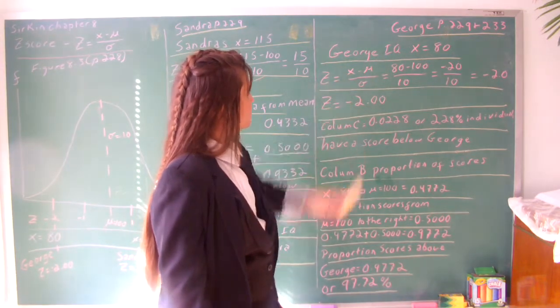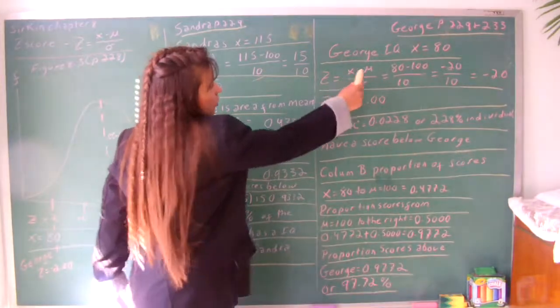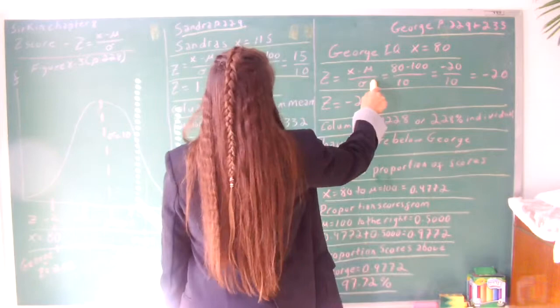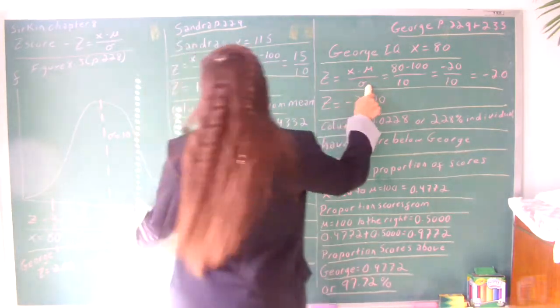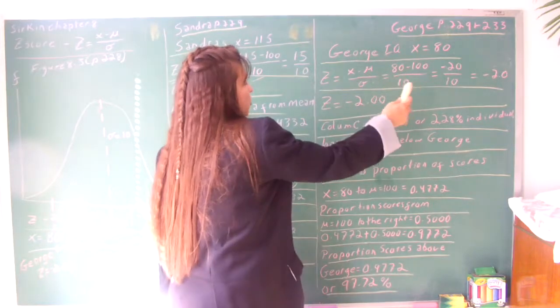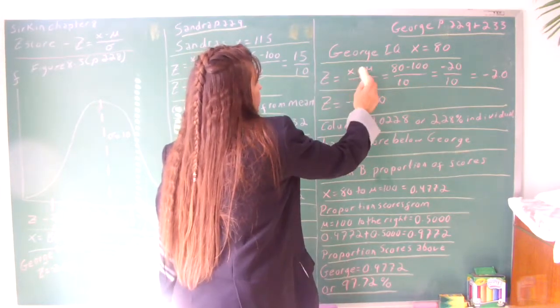Again, z equals his score minus the population mean mu, which is 100, over the population standard deviation, which is 10. We put it in, again, we show off our work. We put George's score in here for the x.